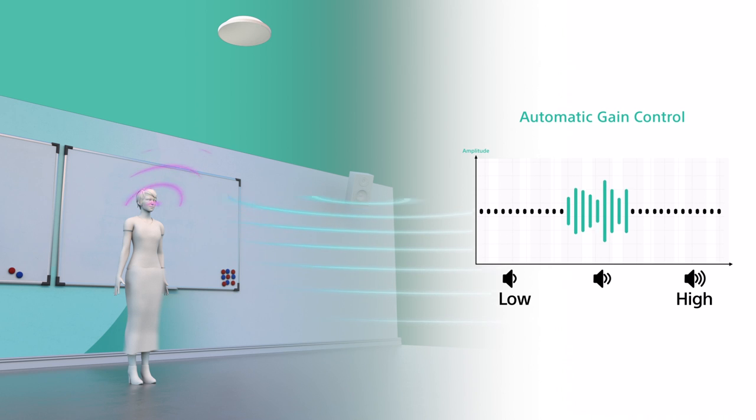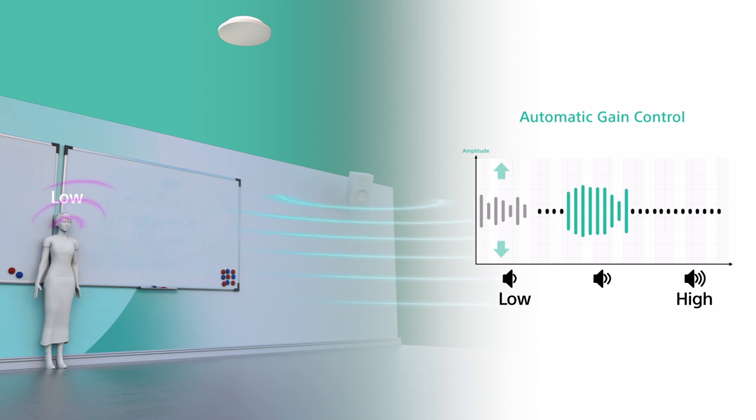Automatic gain control detects and adjusts loud and quiet voices to provide clear audio at an appropriate level.